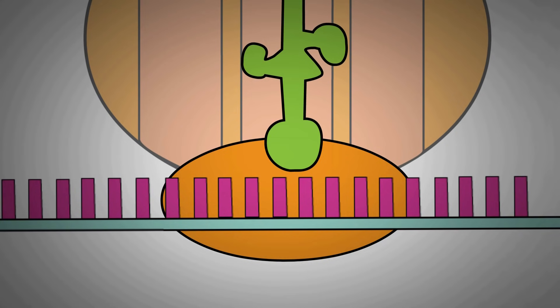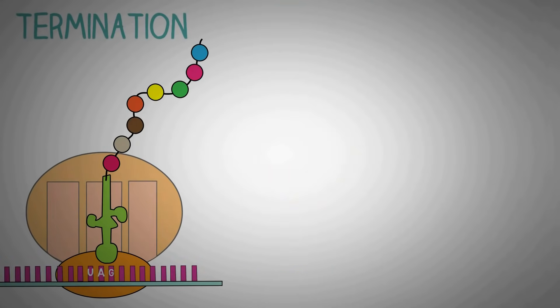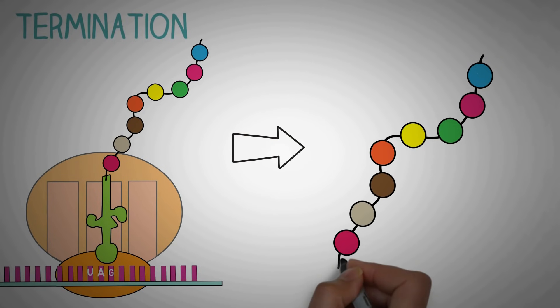When the ribosome reads any of the three codons the UAG, UAA or UGA, it stops the process of translation and the polypeptide chain is released from the translation complex.